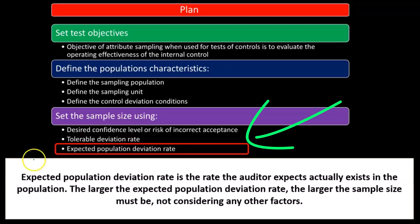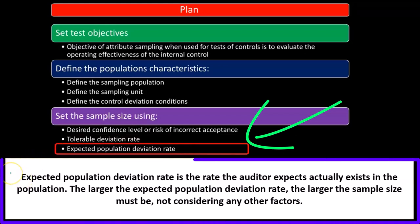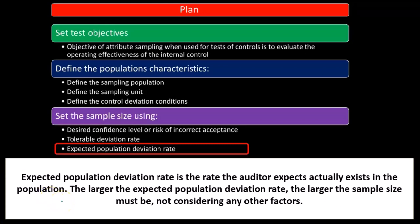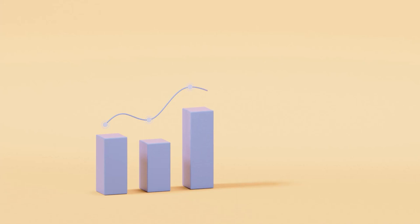The expected population deviation rate is the rate the auditor expects actually exists in the population. The larger the expected population deviation, the larger the sample size must be. If we consider there's going to be a larger deviation, we would want to increase the sample size because there's going to be more risk, not considering any other factors.